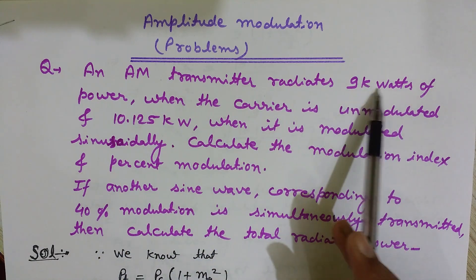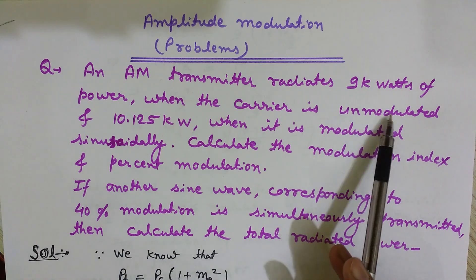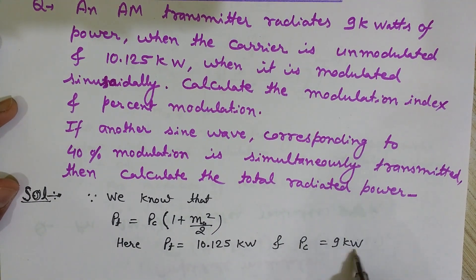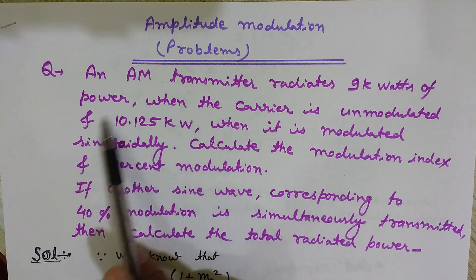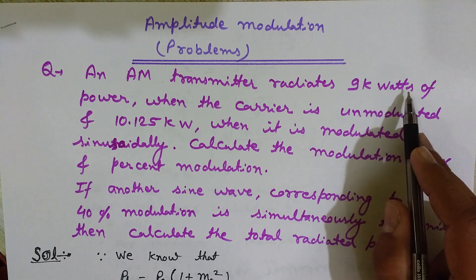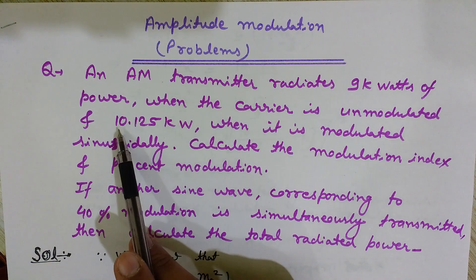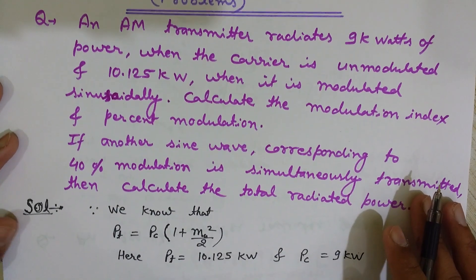Now let's discuss this problem. The problem states that an AM transmitter radiates 9 kilowatts of power when the carrier is unmodulated. So the power of the carrier wave before modulation, Pc, is 9 kilowatts. When it is modulated, the total power becomes 10.125 kilowatts. The modulated wave contains three components: the carrier wave, the upper sideband, and the lower sideband. I want to find the modulation index and the percent modulation.